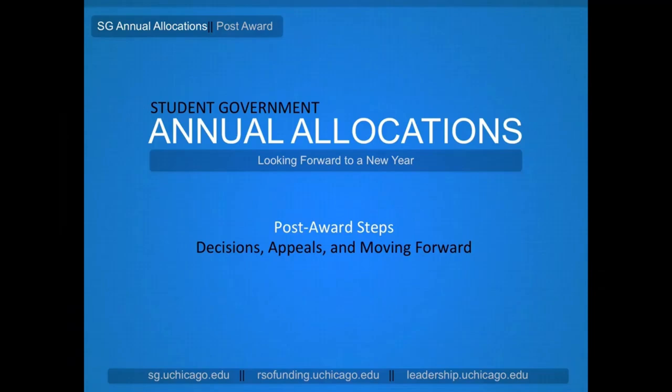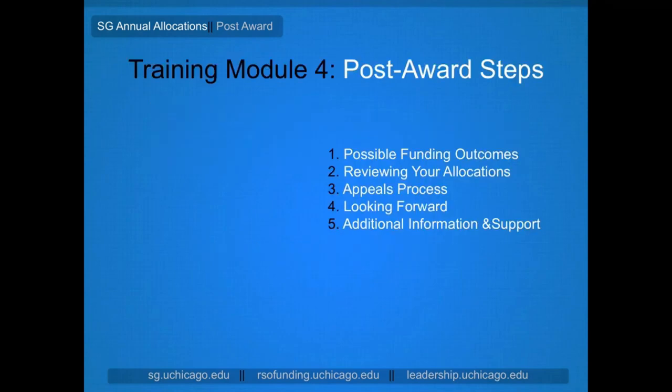Welcome to the fourth and final training module for student government's annual allocations. In this module, we'll take a look at the post-award steps, including an overview of potential funding results, how to review the committee's decisions, the process for appealing a decision, and what to do once you have your results.